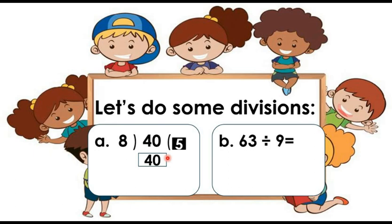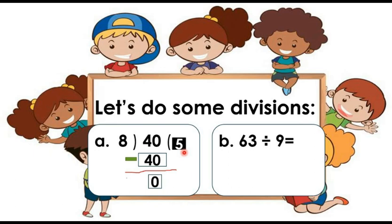Now we need to subtract these two numbers to get a remainder. And what is the remainder? Yes, the remainder is 0, and the answer is 5. In division, we use some special terms: 40 is the dividend — the number to be divided is dividend. And 8 is divisor — the number that divides dividend is divisor. Number 5 is quotient — the result of division is called quotient. And 0 is the remainder — the leftover number of division is called remainder.